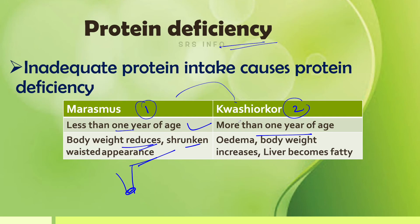Kwashiorkor affects children and adults more than one year of age. It is characterized by edema — the broken-down amino acids are not utilized for protein synthesis. As a result, edema occurs, body weight increases, and fatty liver can develop. The key symptoms of kwashiorkor are edema, increased body weight, and fatty liver.